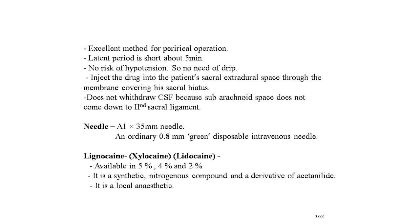The drug is injected into the patient's sacral extradural space through the membrane covering the sacral hiatus. CSF is not withdrawn because the subarachnoid space does not come down to the second sacral ligament. A 1-inch to 35 mm needle should be used; an ordinary 0.8 mm green disposable intravenous needle can be used for caudal epidural anesthesia.